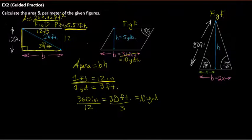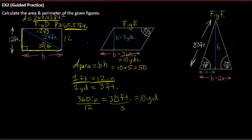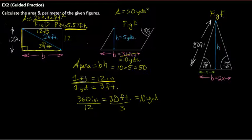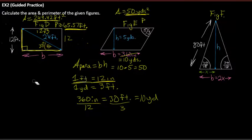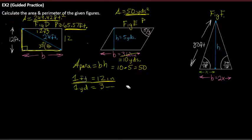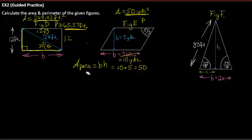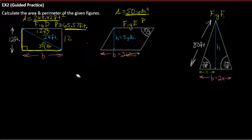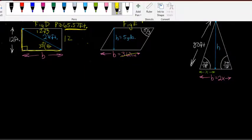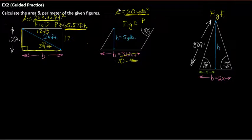Now that base is 10 yards and height is 5 yards, base times height gives exactly 50 square yards. To calculate the perimeter we need all four sides, but we only know two.